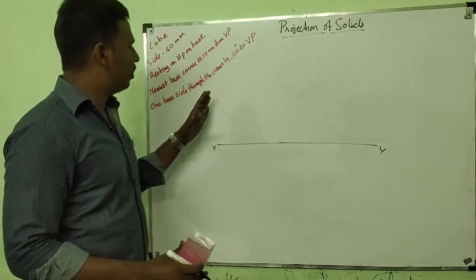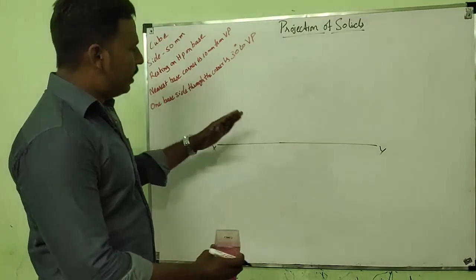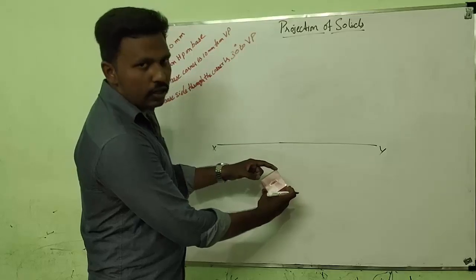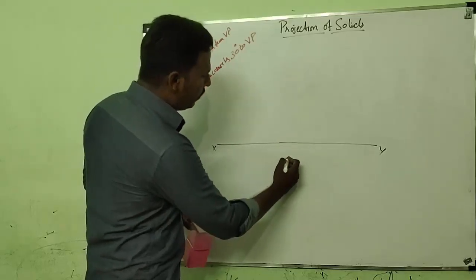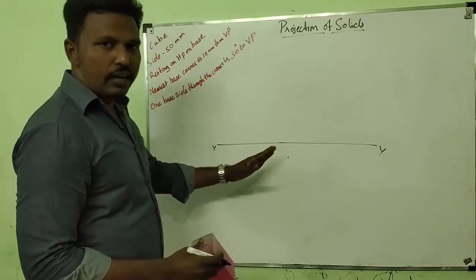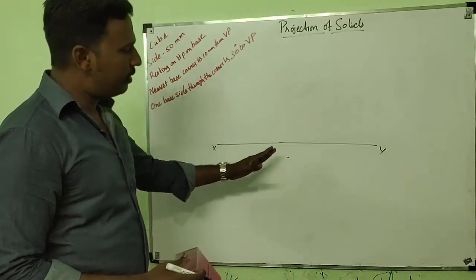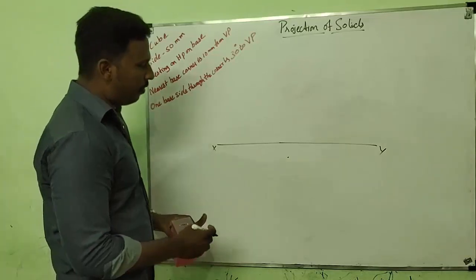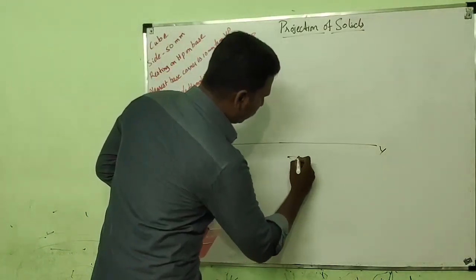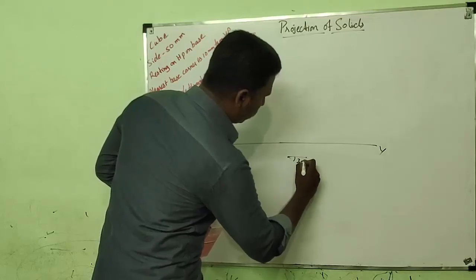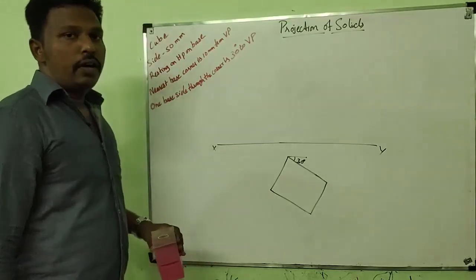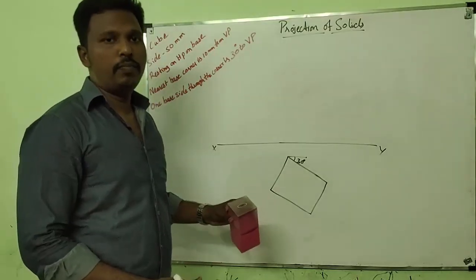We start from the top view because the base view is the top view. We use the given conditions: the object is 10 mm from the VP, meaning one of its corners is 10 mm from VP, so we give a gap of 10 mm from the VP. The base side is inclined at 30 degrees to the VP, so we draw a line at 30 degrees to VP. Along this 30 degree line, we draw the top view. The top view is now drawn.